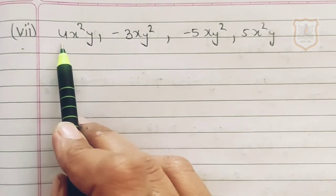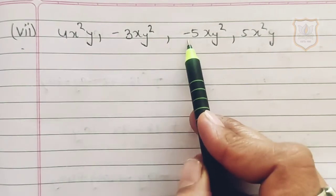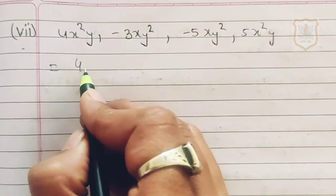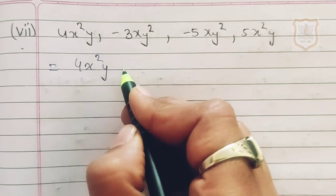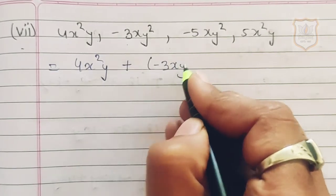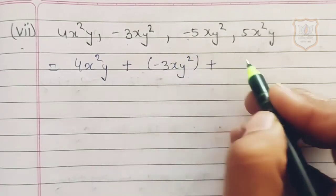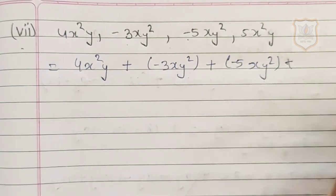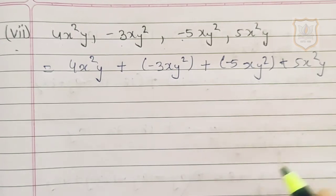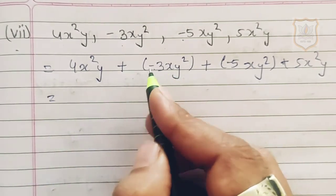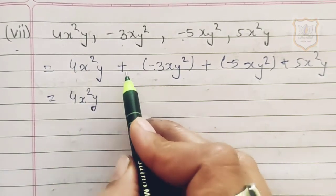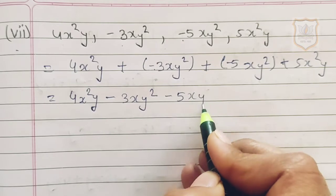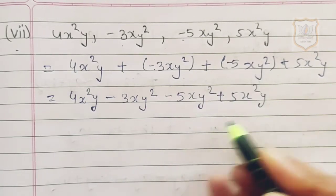The seventh part: 4x²y, minus 3xy², minus 5xy², 5x²y. We place the addition signs: 4x²y plus (minus 3xy²) plus (minus 5xy²) plus 5x²y. Opening the brackets: plus minus becomes minus, so we write 4x²y minus 3xy² minus 5xy² plus 5x²y.